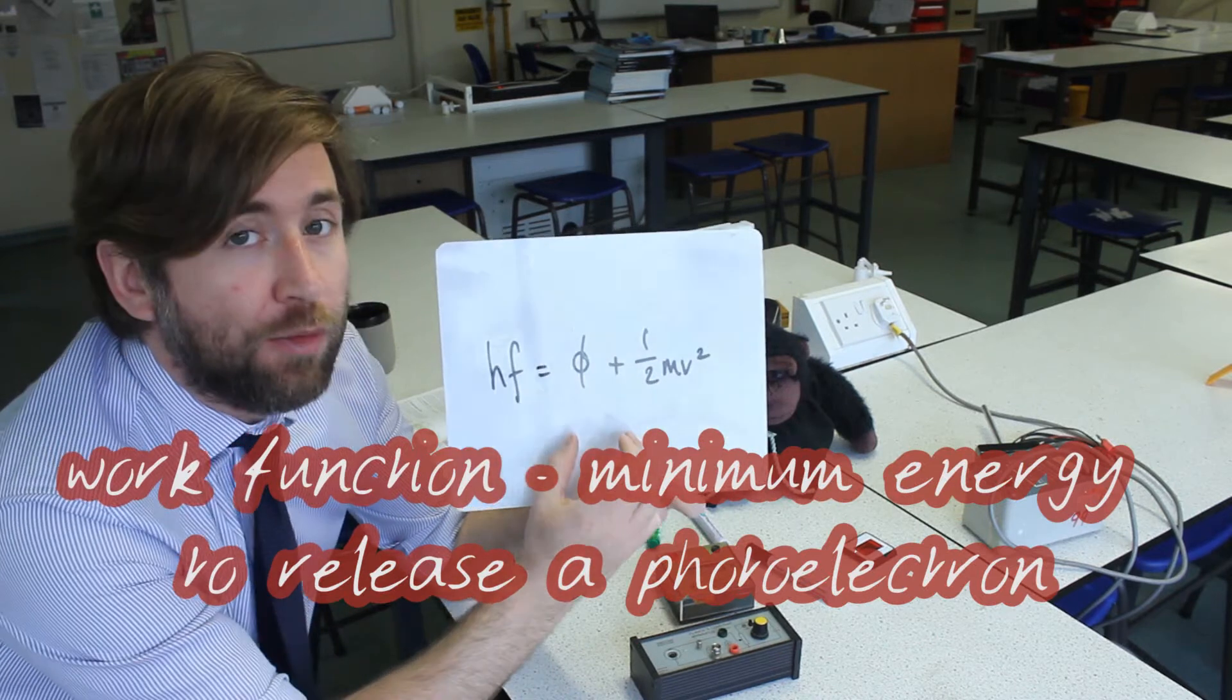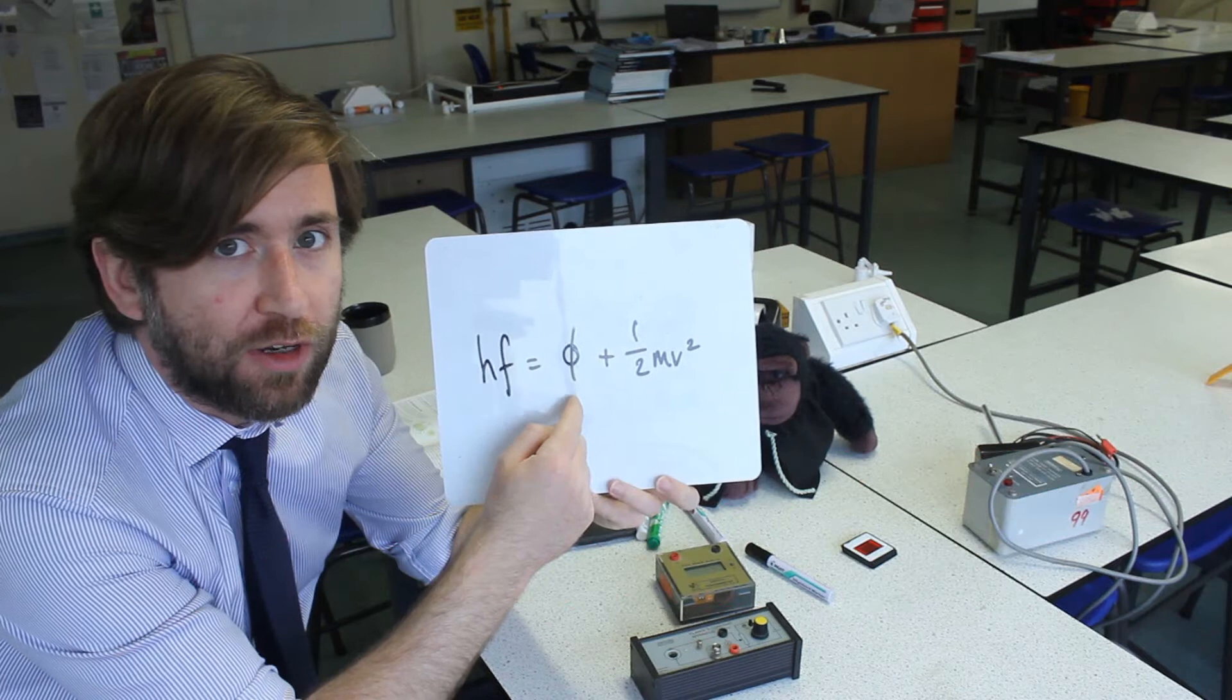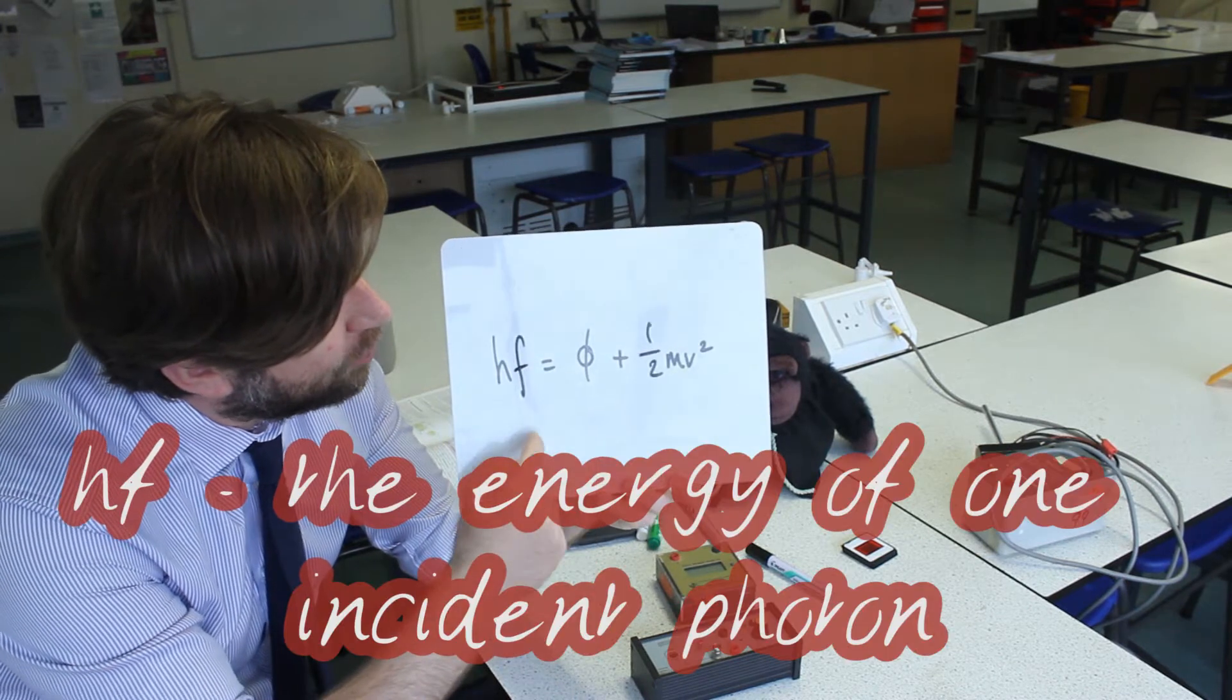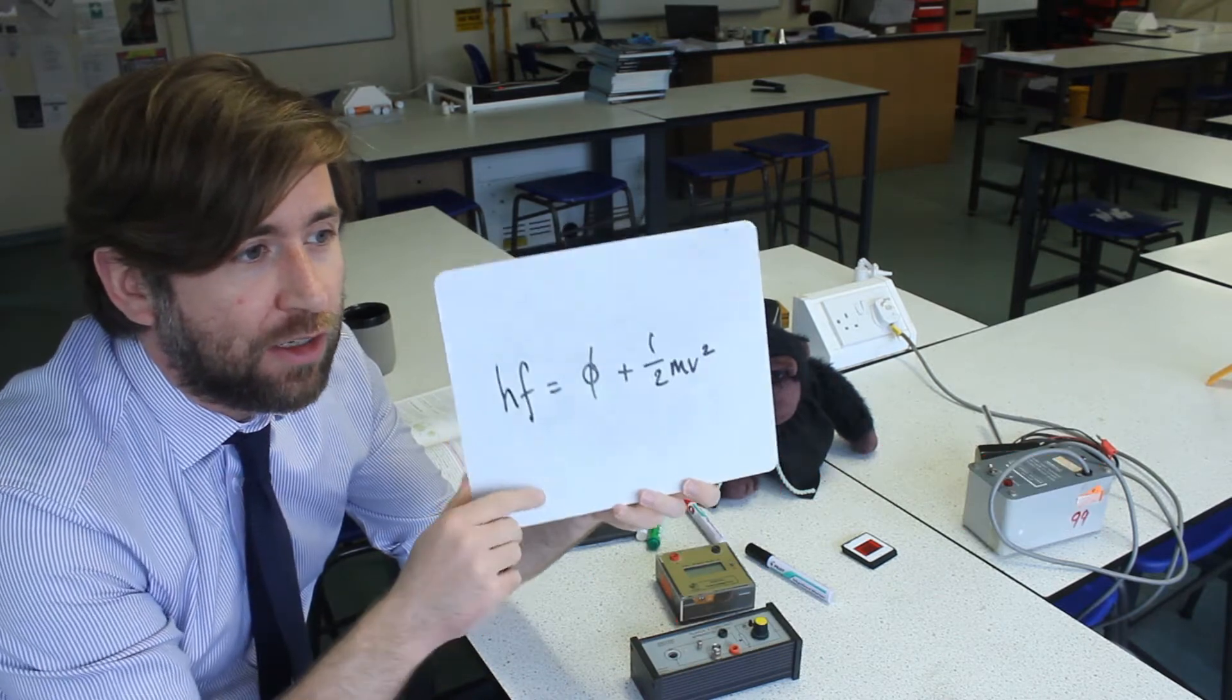We're going to ignore this at the moment, the work function. We don't actually need to work that out but we will be able to infer it afterwards. And we're also going to measure, we're going to vary the frequency of the incident light.